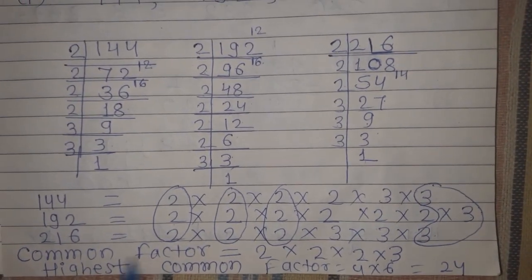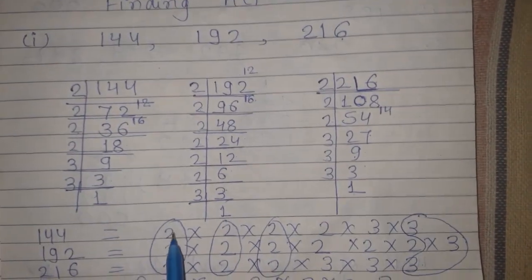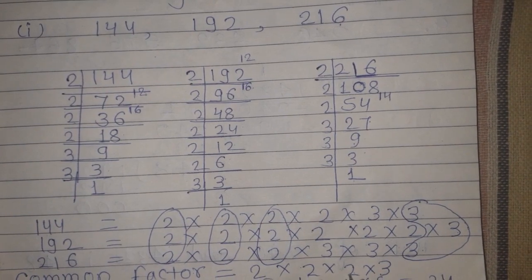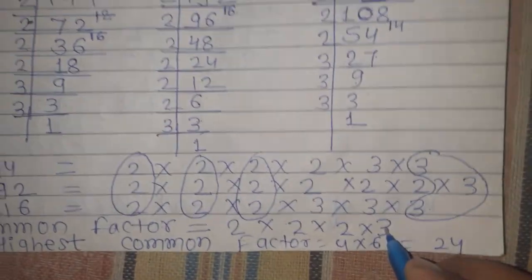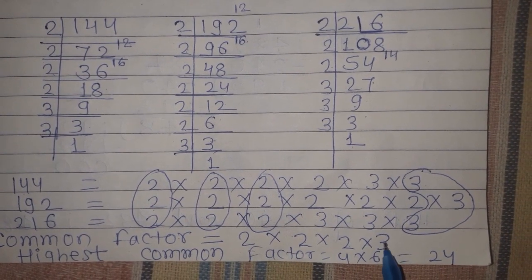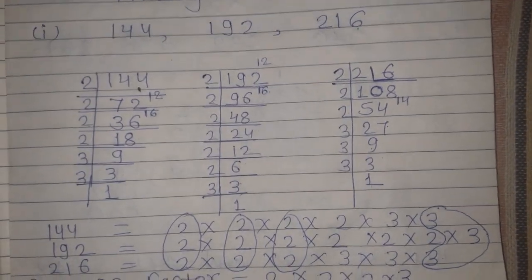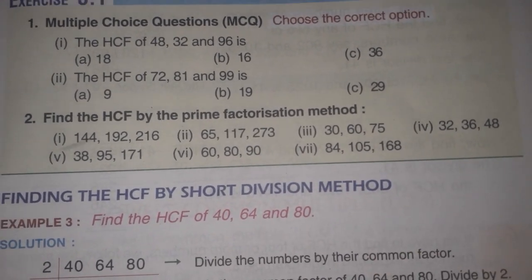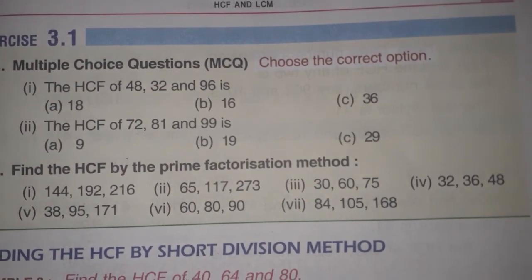After finding the prime factorization, students, we have to find the common factors. Common factor means the prime numbers that appear in all three factorizations — those we take as common. Here we can see: from the pairs of 2, we take one 2 from each pair across all three — three times 2. For 3, only one pair is common across all three, so we take 3 once. To find the highest common factor, we multiply these 4 numbers: 2 × 2 × 2 × 3 = 24. So the HCF is 24. You have 5 questions to practice — solve them and send me a photograph on the group so I can check if your concept is clear.